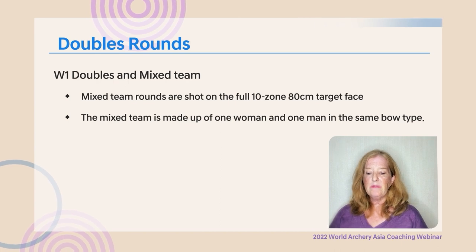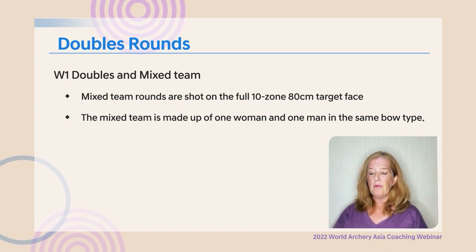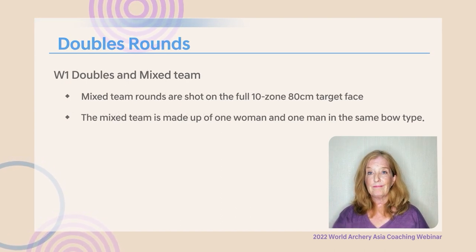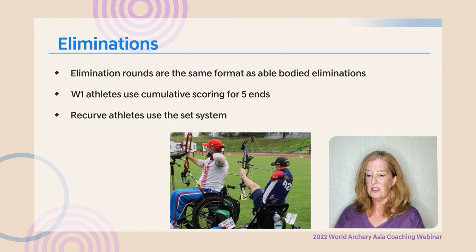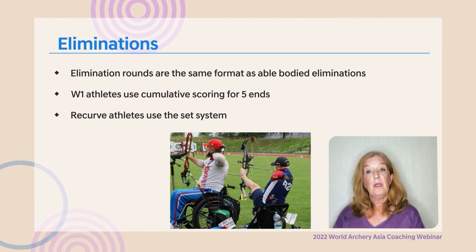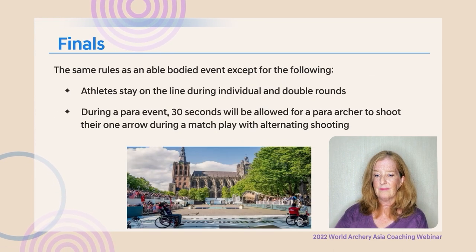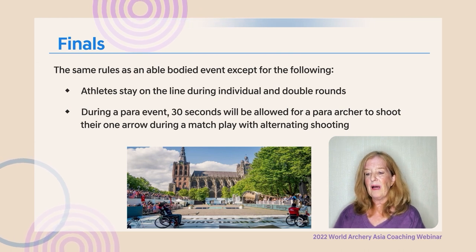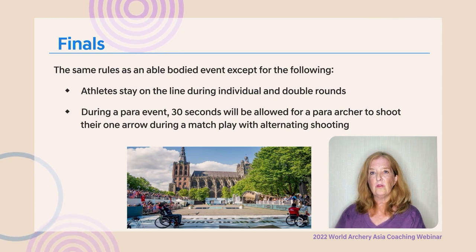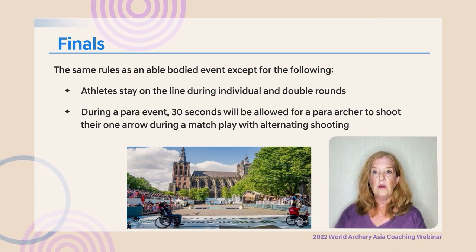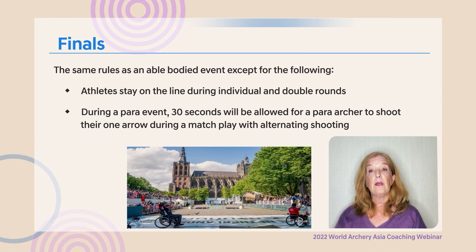W1 doubles and mixed teams are shot on a full 10-zone 80-centimeter target face; mixed teams consist of one woman and one man shooting the same bow type. Elimination rounds follow the same format as able-bodied eliminations. W1 athletes use cumulative scoring for five ends; recurve athletes use the set system. During a para event, 30 seconds will be allowed for a para archer to shoot their one arrow during match play with alternating shooting.